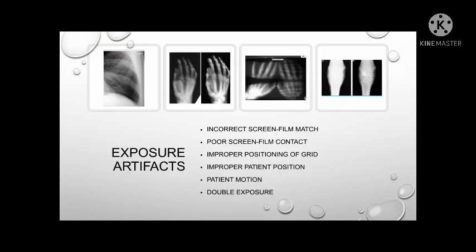Another exposure artifact is the improper positioning of the grid, which results in a uniform reduction of density across the entire film. Improper patient position and patient motion are also exposure artifacts that may cause blurring on the radiograph. A clear instruction and proper immobilization technique should be applied if needed. Double exposure is also an exposure artifact, where two exposures are made on one radiographic film prior to processing. This is common on mobile radiography due to mixing up of exposed and unexposed cassettes. Proper labeling of the holders should be applied to avoid this.